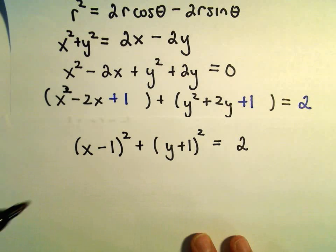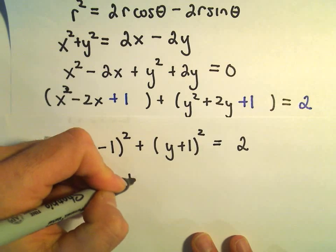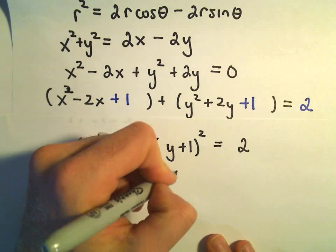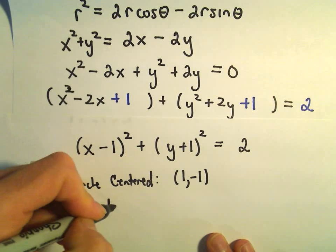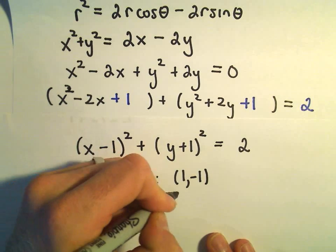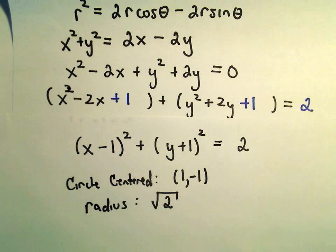And this is now just going to be a circle. The center will be at positive 1, negative 1. And it's going to have a radius of, remember, we have to take the square root of the number. So it would have a radius of square root of 2.